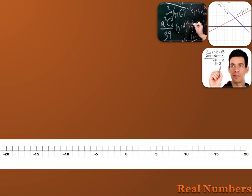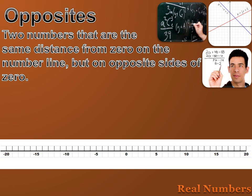Here's another concept you need to understand: opposites. This becomes useful in algebra when you manipulate equations. Two numbers that are the same distance from 0 on the number line but on opposite sides of 0 are opposites. For instance, the opposite of minus 9 is plus 9. They're opposites because they counteract each other — if I add minus 9 to 9, I get 0. In other words, if I combine opposites, they make each other disappear.